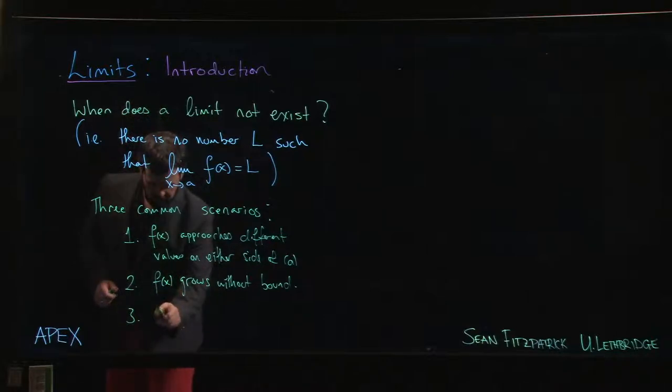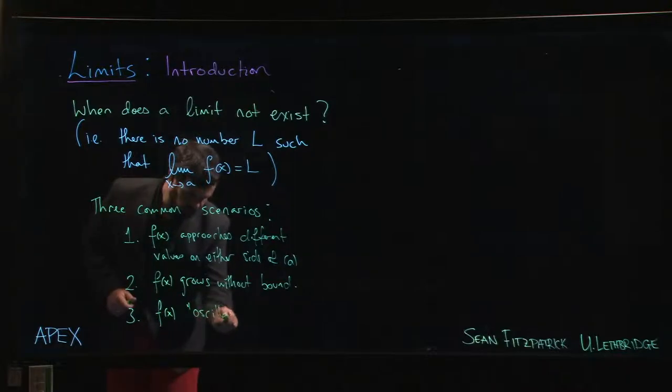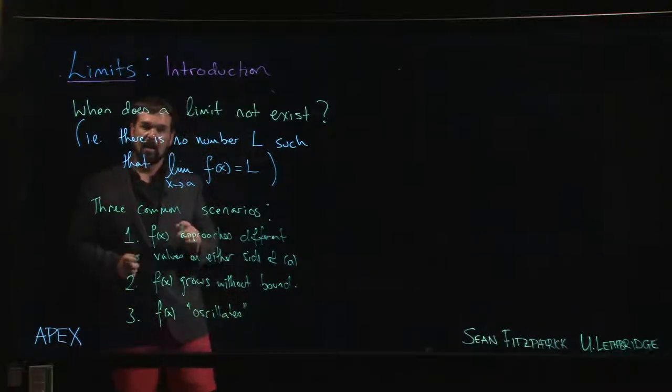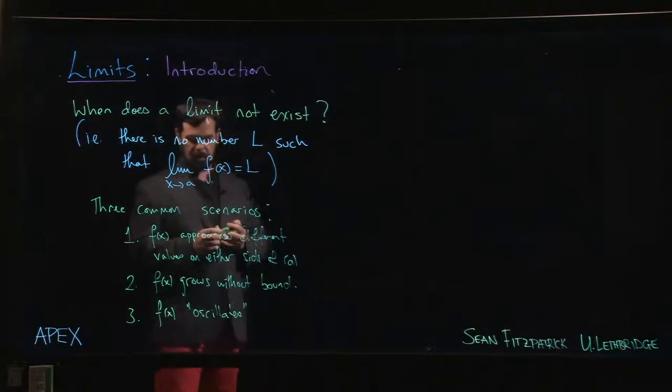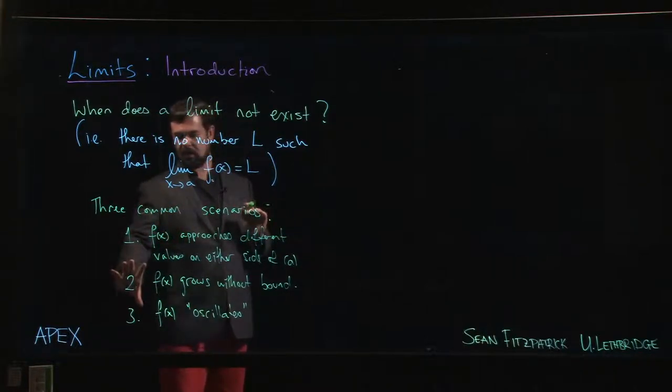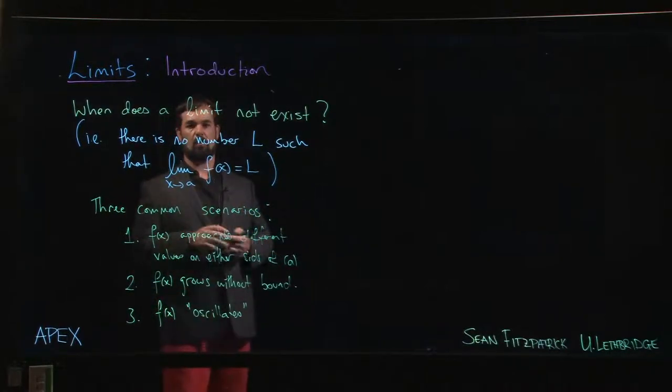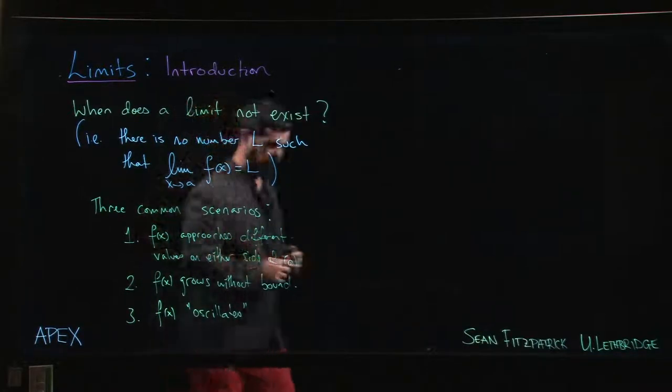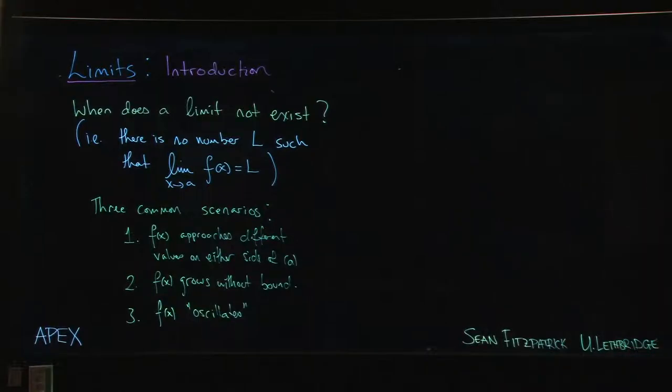The last one is that our function oscillates, and we'll look at an example where we try to make it clear what we mean when we say that the function oscillates, why there is no limiting value in this case. So we'll look at these scenarios each in turn. We'll look at some examples to explain what's going on and why we can't possibly have a limit in any of these situations.